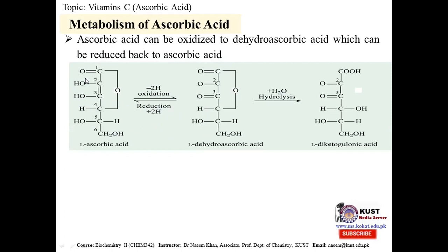Conversely, dehydroascorbic acid can accept two hydrogen atoms from a good reducing agent, converting it back to ascorbic acid — in this role it acts as an oxidizing agent. This explains how ascorbic acid is involved in redox reactions. As noted, carbon numbers two and three have the double bond and OH groups; when those hydrogen atoms are passed to other substances, those substances are reduced and vitamin C becomes dehydroascorbic acid.